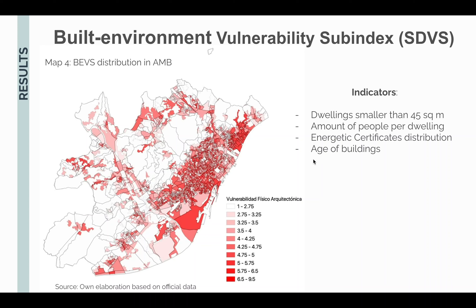The fourth sub-index is the built environment vulnerability sub-index. We can see a big concentration of red areas in downtown Barcelona and especially in one area which is an industrial zone.